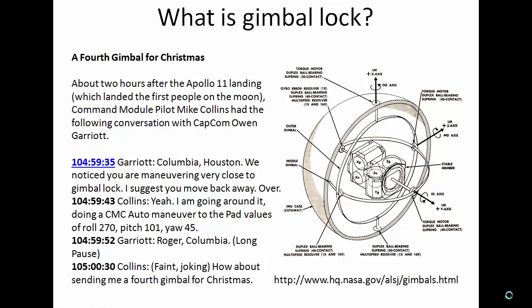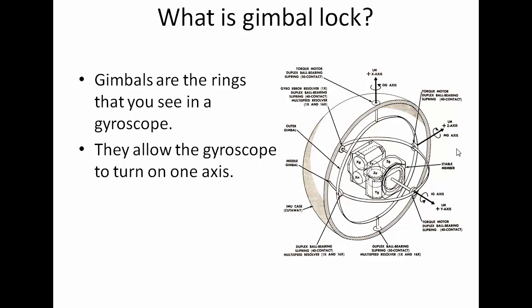The drawing shows a gyro that would be found on something like a NASA spaceship that controls orientation. You can see the rings around it that allow it to move freely — those are called gimbals. Gimbals are the rings you see in a gyroscope; they allow the gyroscope to turn on one given axis. You need at least three of them to turn on the X, Y, and Z axes.